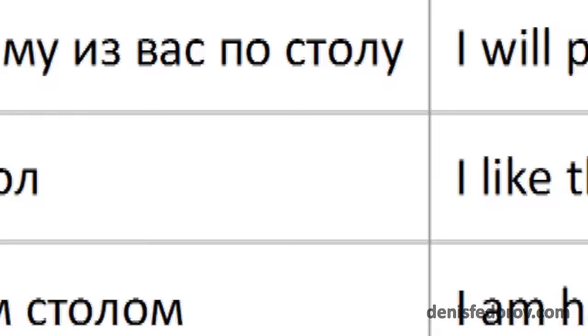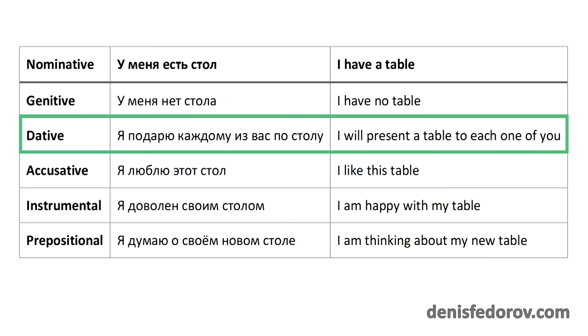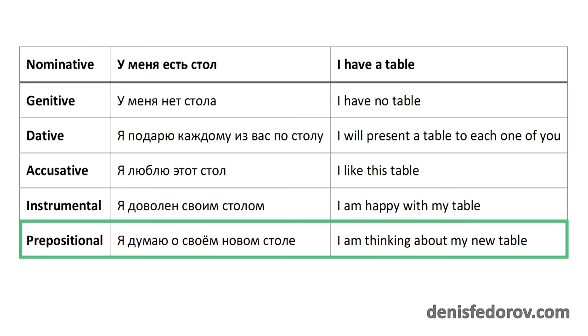Nominative case. У меня есть стол. I have a table. Genitive case. У меня нет стола. I have no table. Dative case. Я подарю каждому из вас по столу. I will present the table to each one of you. Accusative. Я люблю этот стол. I like this table. Instrumental case. Я доволен своим столом. I am happy with my table. Prepositional case. Я думаю о своем новом столе. I am thinking about my new table.